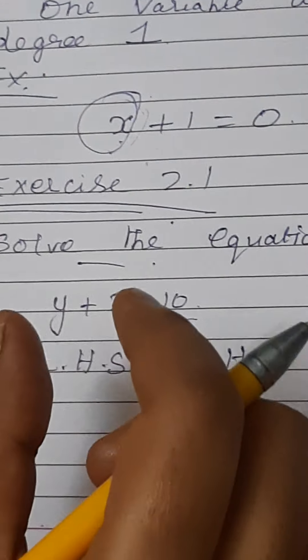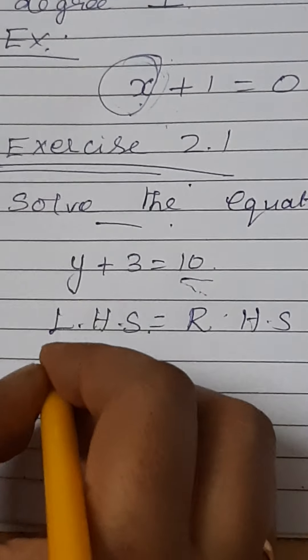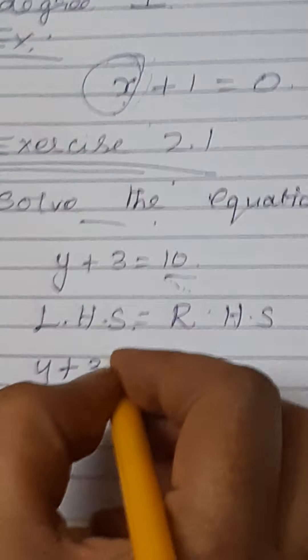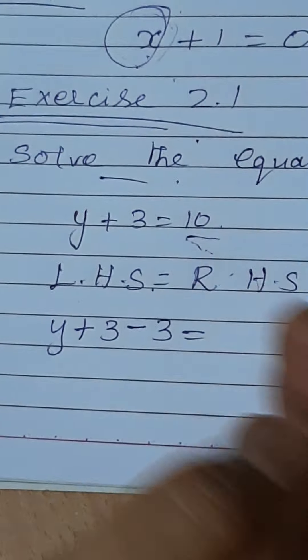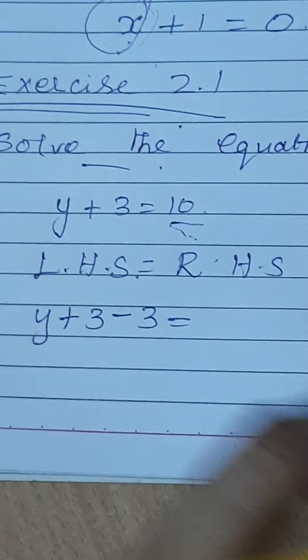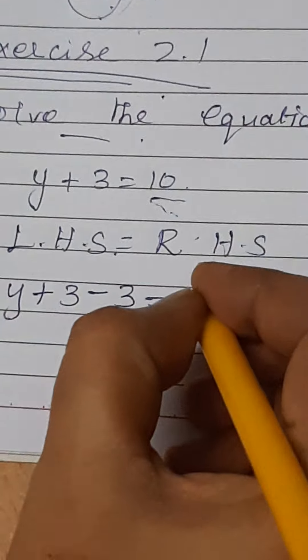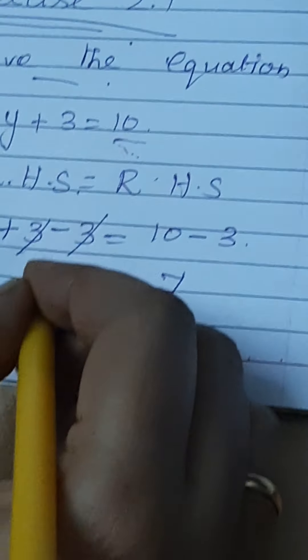We subtract 3 from both sides: y plus 3 minus 3 equals 10 minus 3. The 3s cancel out, giving y equal to 7. So y equal to 7 is the answer.